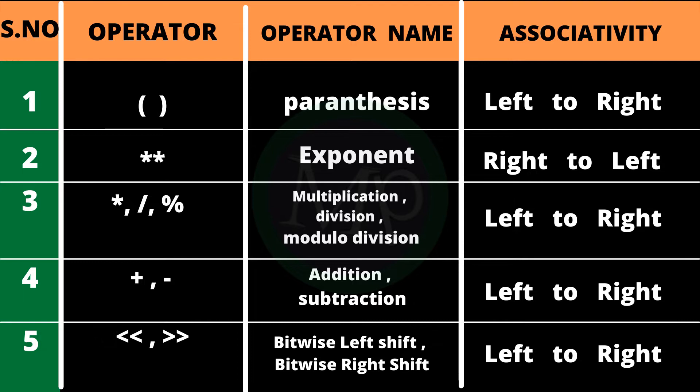The next highest priority is the exponent operator. When there is more than one exponent in an expression, evaluation goes right to left. After that, the next highest priority operators are multiplication, division, and modulus division. When these appear together, evaluation goes left to right.